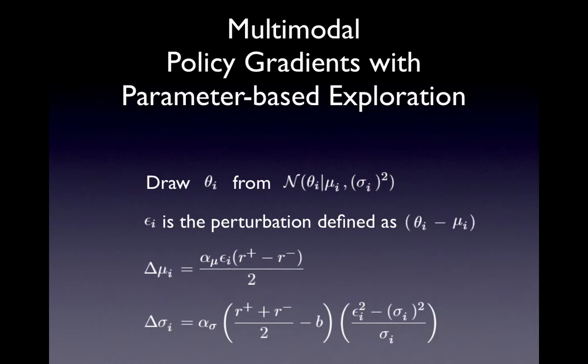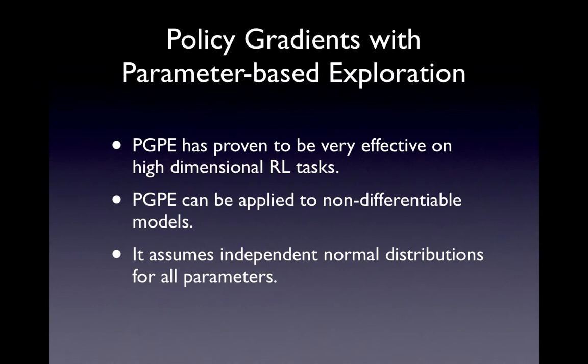If we derive the update rule from a basic framework of reinforcement learning by taking parameter perturbations for exploration into account, we end up with an update rule that is very similar to the update rule of REINFORCE. But instead of changing the actions and getting a teaching signal that one has to backpropagate through the controller to get a gradient for the parameters, these update rules are directly applied to the parameters. One advantage of this technique is that PGPE can be applied to non-differentiable controllers because no gradient signal has to be backpropagated. But the most obvious advantage is that the noise in the gradient is much smaller and therefore PGPE converges much faster than usual policy gradient methods.